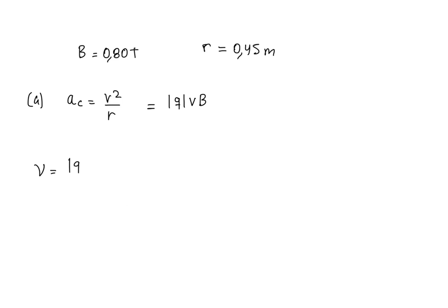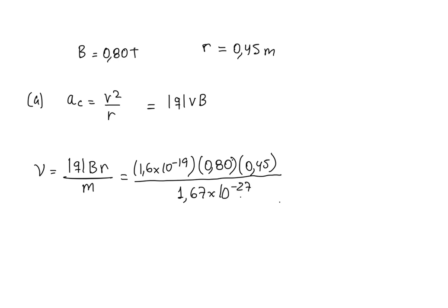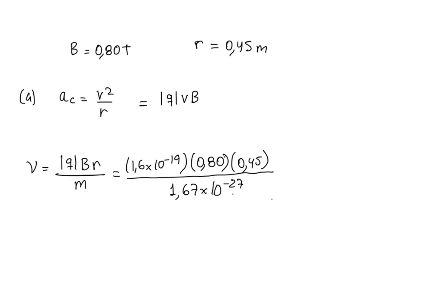Solving for speed, we get: v = (qBr) / m. Substituting values — charge is 1.6×10⁻¹⁹ C, magnetic field is 0.80 T, radius is 0.45 m, and mass is 1.67×10⁻²⁷ kg — we calculate the speed using our calculator.